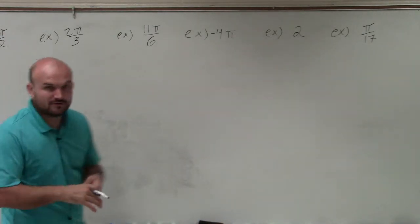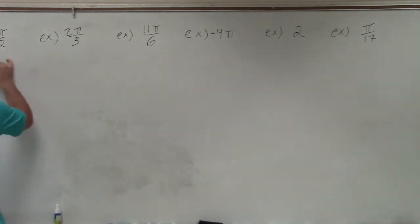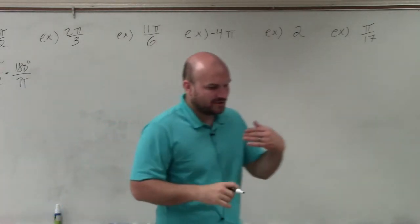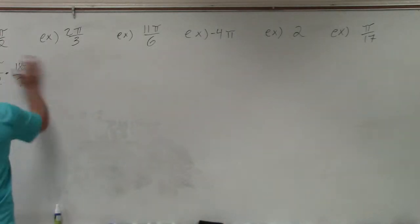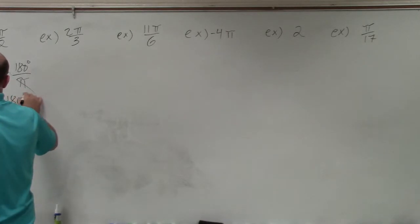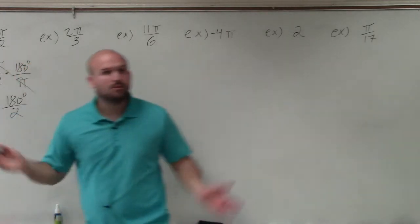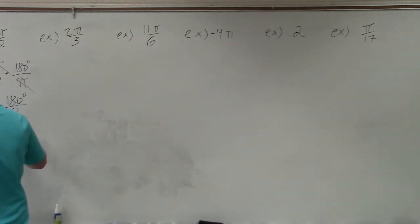So in the first one I have π over 2. All I'm simply going to do is take my angle, so π halves, and I'm going to multiply by 180 degrees divided by π. My conversion here, my π's, when I multiply, you always multiply across. Well since I have π in the numerator and in the denominator, those are going to divide out, and therefore I'm just left with 180 degrees divided by 2. I can divide 180 divided by 2. That's just going to leave me with 90 degrees.